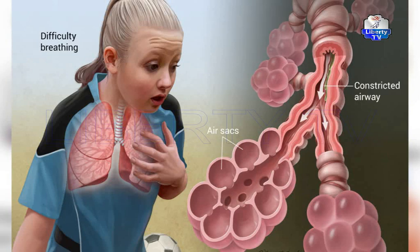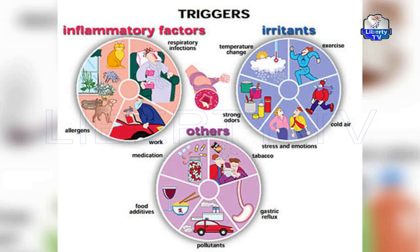When symptoms persist, we move to step two and add a controller medication — usually a low-dose inhaled corticosteroid, also delivered via inhaler. For patients who develop side effects from the low-dose corticosteroid, we may add a leukotriene modifier or a mast cell stabilizer such as sodium cromoglycate. If not controlled, a long-acting beta agonist with low-to-medium dose inhaled corticosteroid is added, taken once or twice daily.